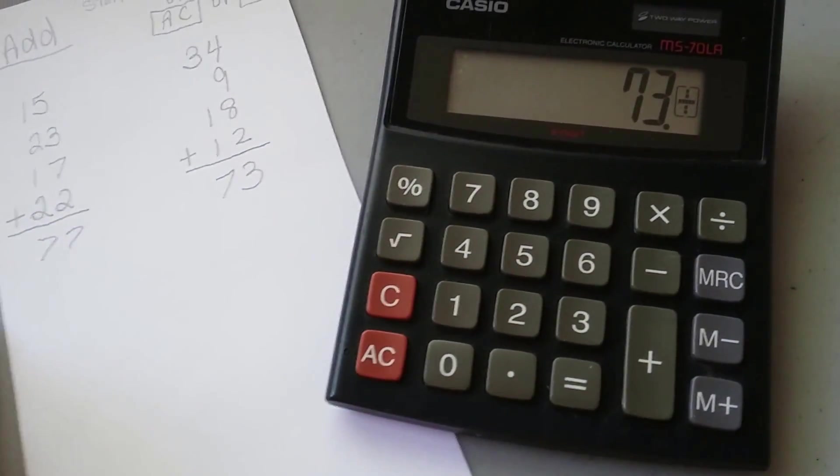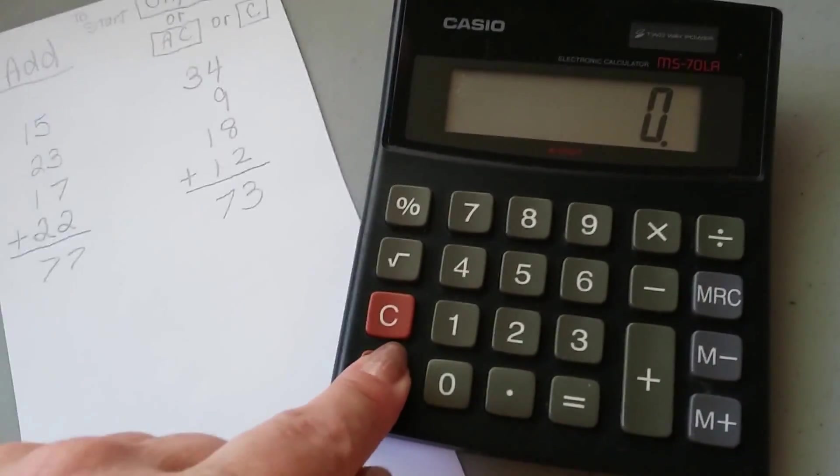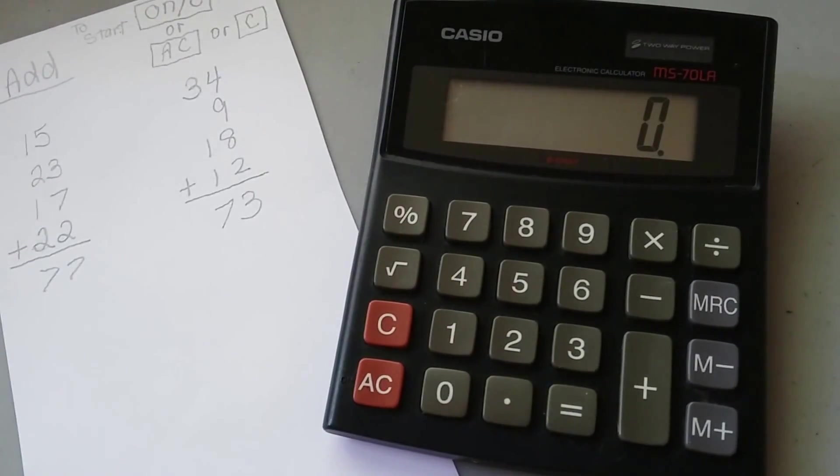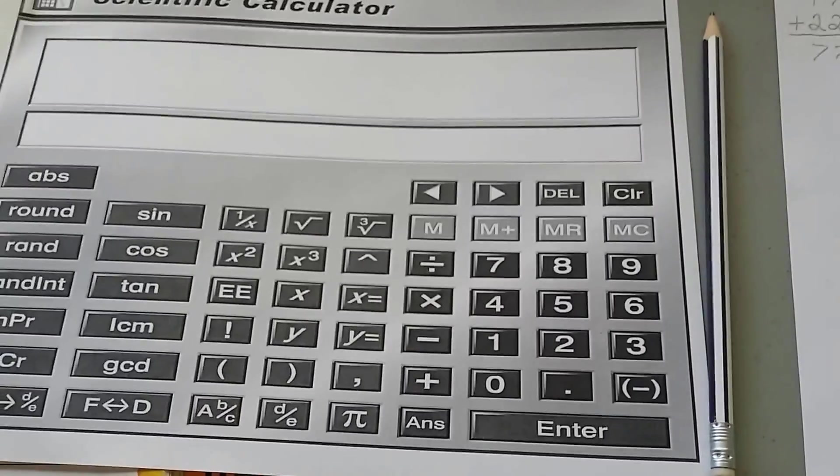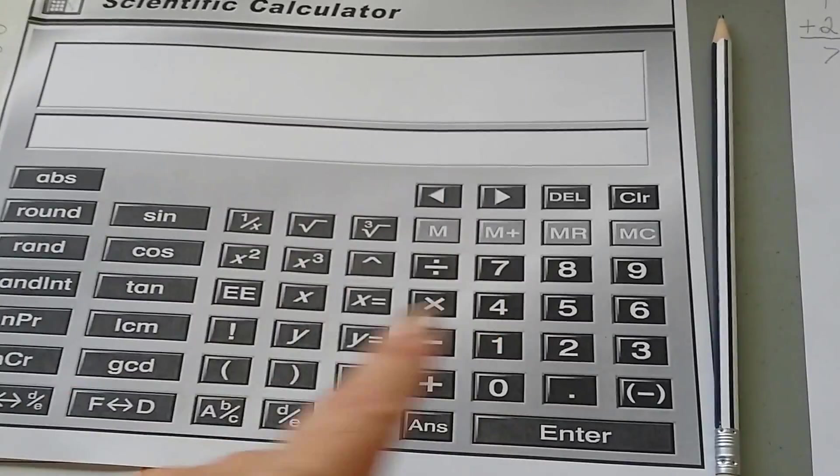Just like we got on the board. And if I want to clear it out again, I hit the AC. And that clears it out. There's lots of other buttons.